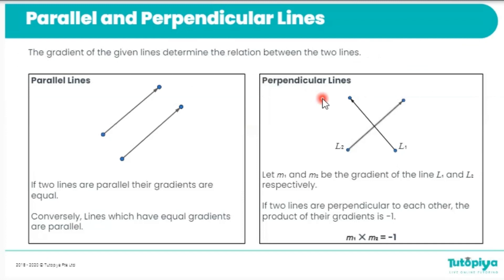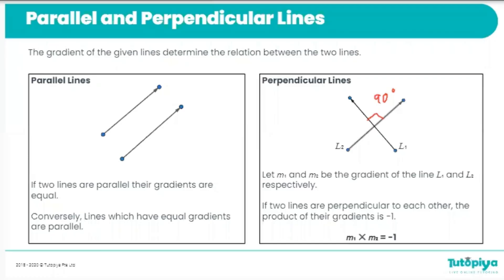Moving on, we're also going to talk about perpendicular lines. Perpendicular lines are lines that are positioned at 90 degrees to each other, so between these lines we have an angle of 90 degrees. When we look at the gradients of perpendicular lines, the link between their gradients is that if we multiply their gradients together it's always going to give us a value of negative 1. So the product of the gradients of two perpendicular lines always equals negative 1.